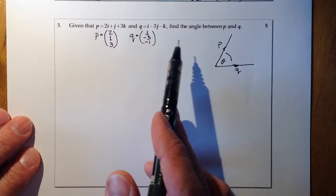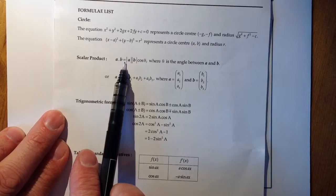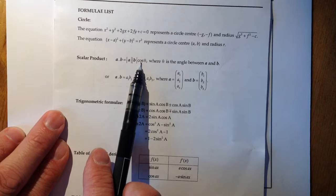So what I'm going to do next is I'm going to be writing down the formula to work out the angle between P and Q. And where I'd find that formula would be on the formula list here. And the angle formula is here. It's buried in the scalar product formula list.